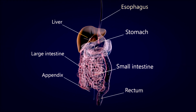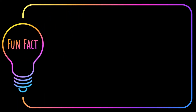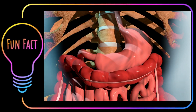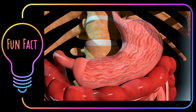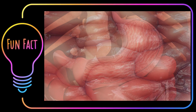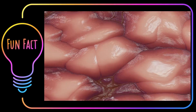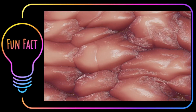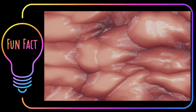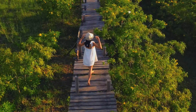Here's a fun fact: did you know that your stomach produces a new layer of mucus every two weeks? This mucus helps protect the stomach lining from its own digestive juices, preventing self-digestion. Nature has its way of keeping us in balance.